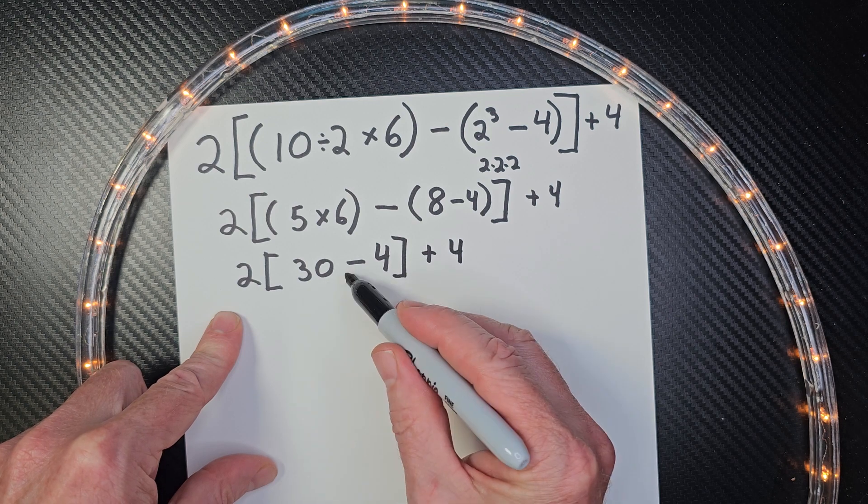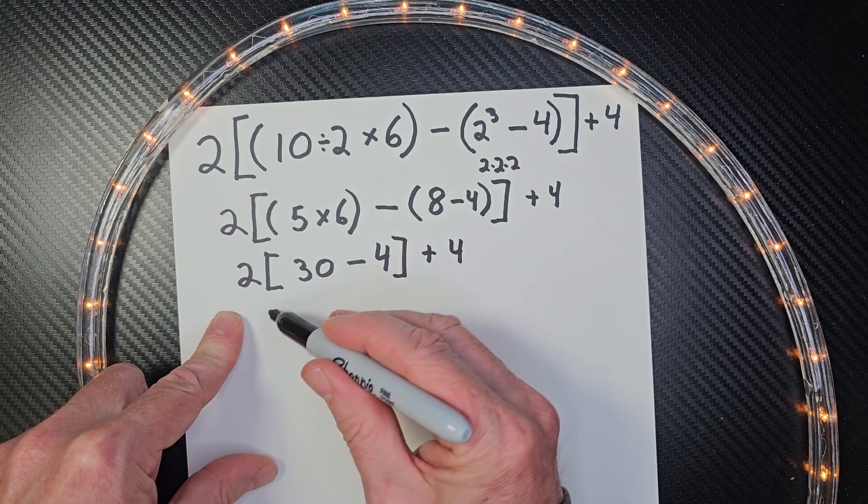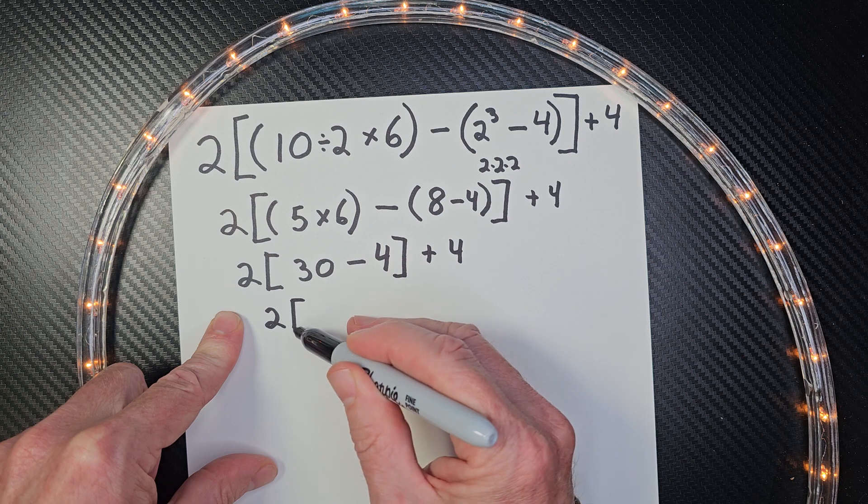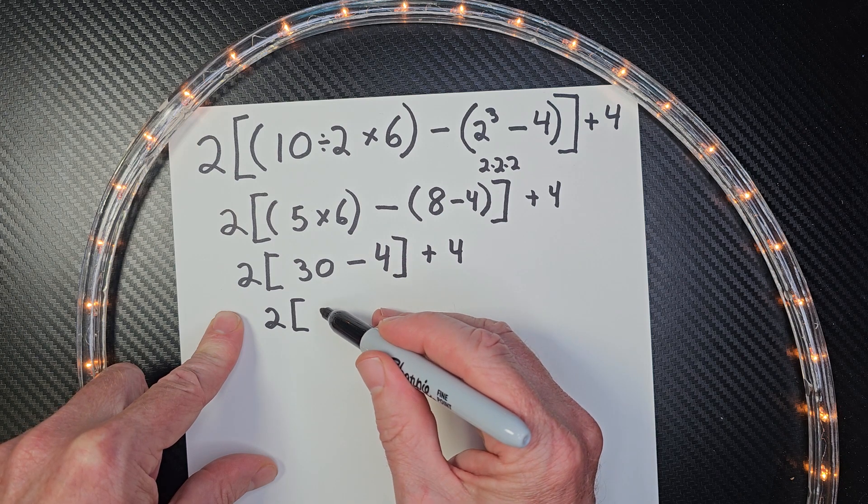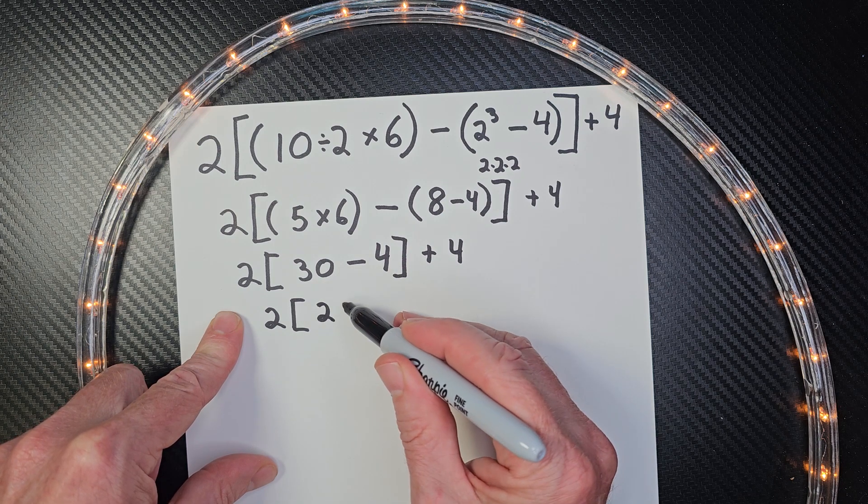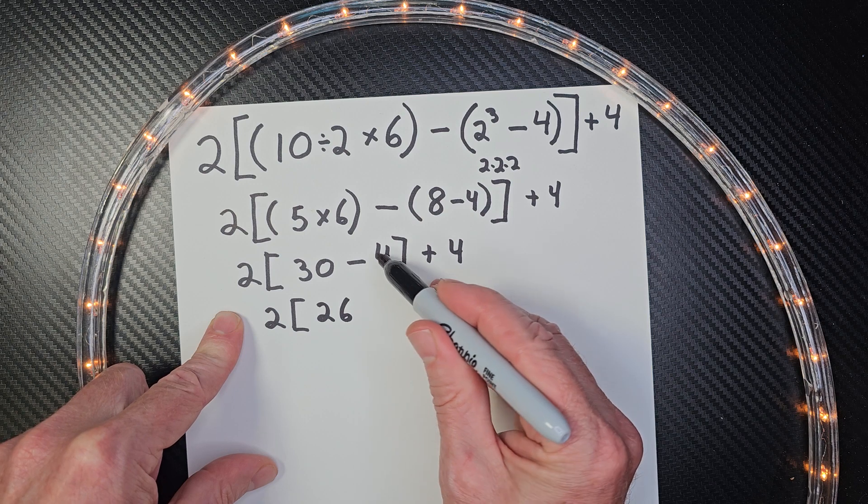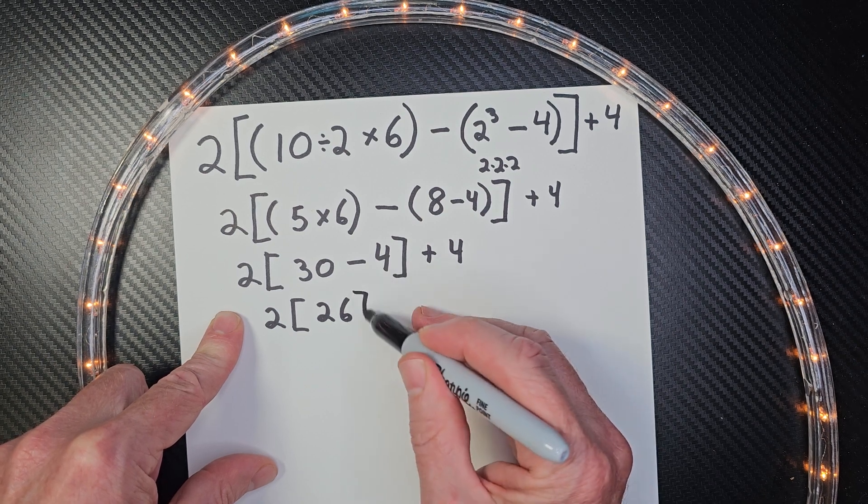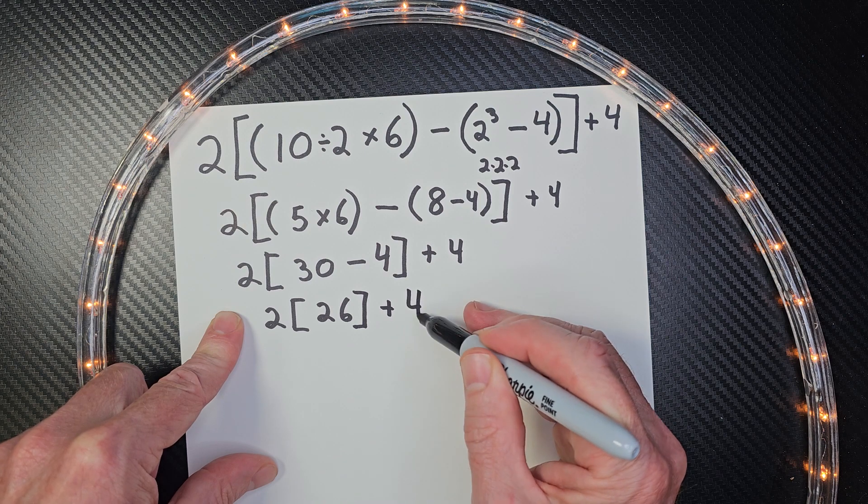So I'm going to continue. I'm going to do 30 minus 4. So do my bracket. 30 minus 4 would be 26. 26, 27, 28, 29, 30. Always checking my work here. Plus 4.